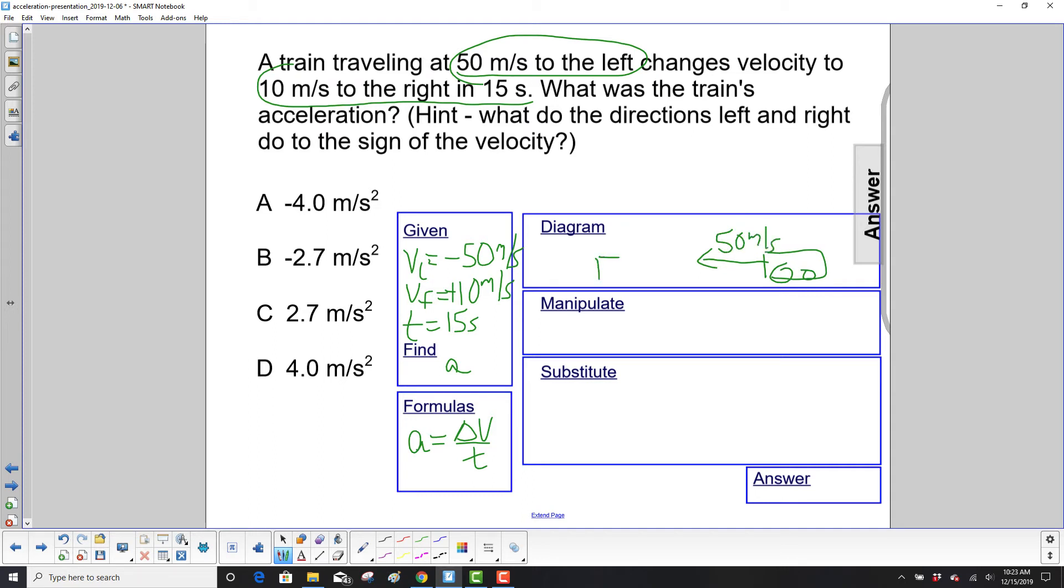And at some point the train turns around or just backs up and is now going 10 meters per second to the right. And that happens in 15 seconds.